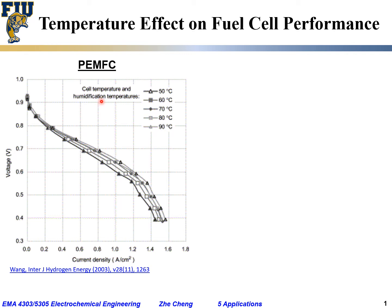The PEM fuel cell is operated from 50 degrees C all the way to 90 degrees C. As you can see, there's not much change as the operating temperature is varied. As the temperature increases slightly, the current doesn't really increase or decrease — it's more or less the same. Higher temperature results in not much change in performance. That's quite often the case for PEM fuel cells.